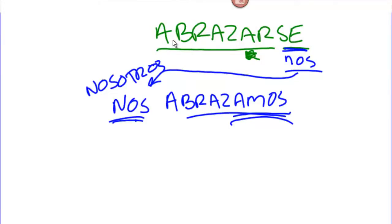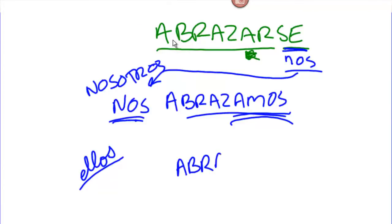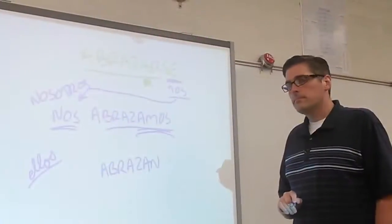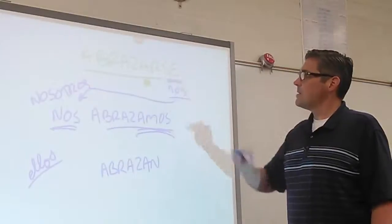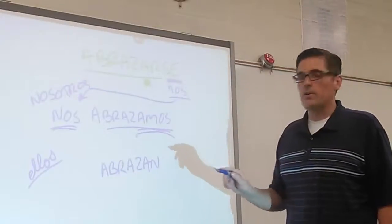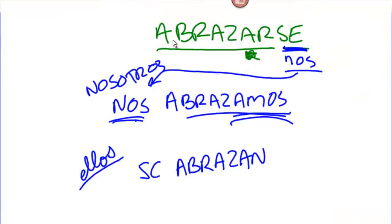How do we say that they hug each other? We conjugate the verb: abrazar becomes abrazan. Conveniently, the se doesn't really change in the ellos/ustedes form. They hug each other: ellos se abrazan.